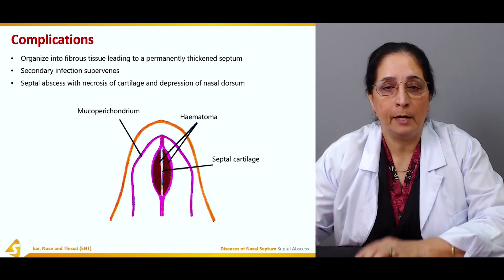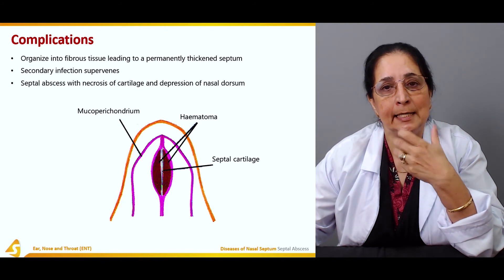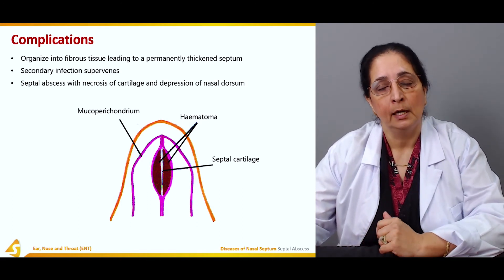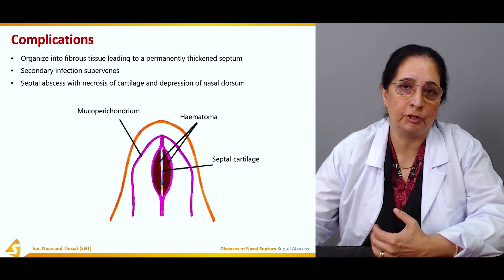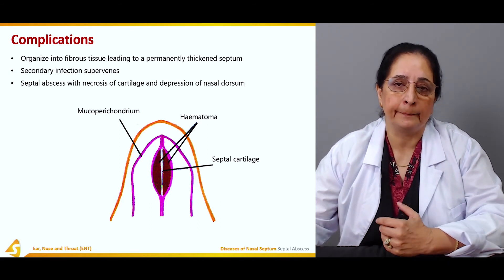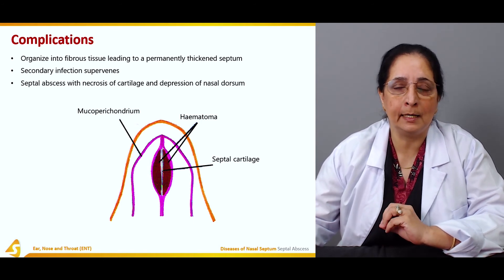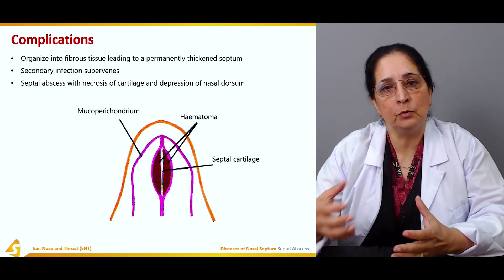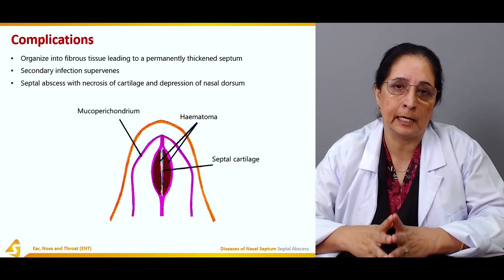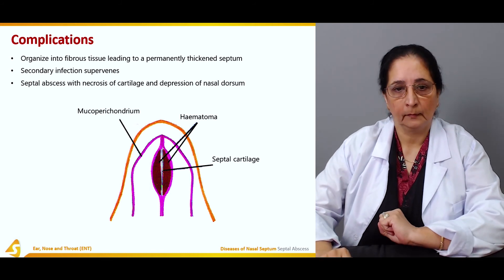Destruction of the cartilage leads to compression of the nasal septum, causing depression of the nasal dorsum and resulting in nasal asymmetry or deformities. These deformities may later require rhinoplasty or plastic surgery to correct. So all these are complications of septal hematoma — if not properly managed, it leads to fibrosis, secondary infection, abscess formation, and tissue necrosis.